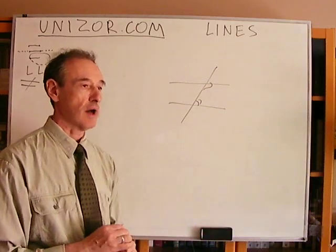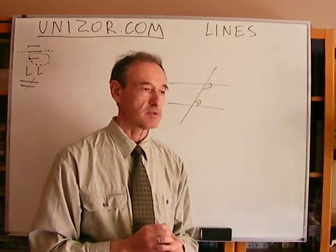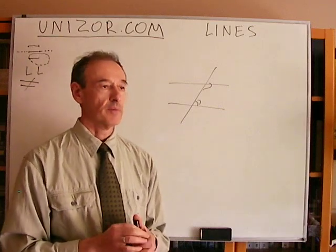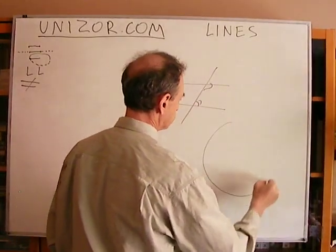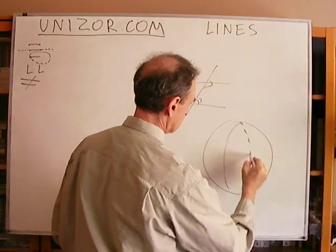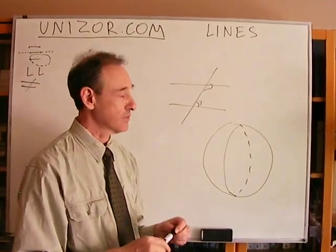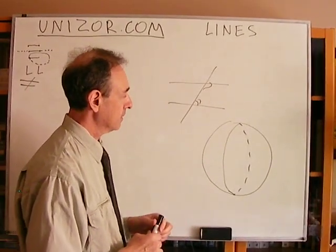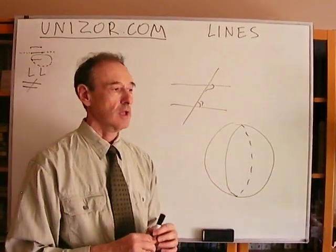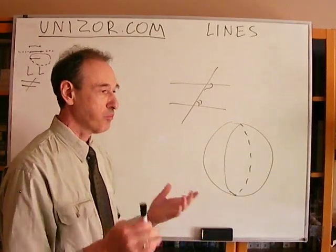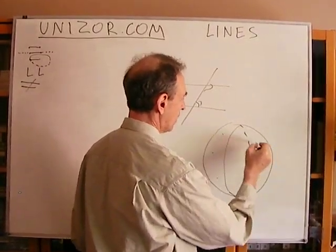Now, back to the other two cases. There was a case of one famous mathematician called Riemann, and he basically came up with the idea of geometry on a sphere. So, you have a sphere — like our planet Earth, for instance, which is almost like a sphere. The geometry on this particular surface is completely different from the geometry on the plane. What are the points? Well, the points are more or less close to what we think about points on the plane. But what are the lines?